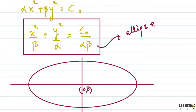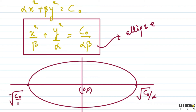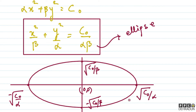Here is the ellipse drawn. If we set y = 0, we get x = ±√(C/α). If we set x = 0, we get y = ±√(C/β). So the intercepts on the x-axis are ±√(C₀/α) and on the y-axis ±√(C₀/β). For any point on this ellipse, the potential energy is the same — so the equipotential surface is an ellipse.